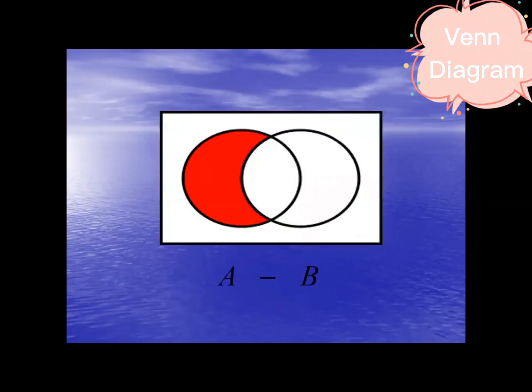What about this one? This is A minus B. Remaining elements of the first set. So here, remaining elements of A. We have the color red. So this is A minus B.